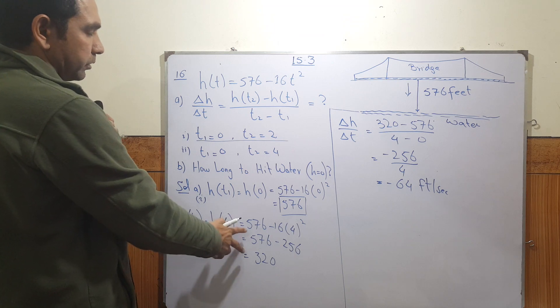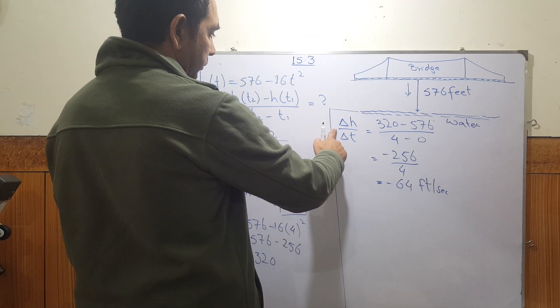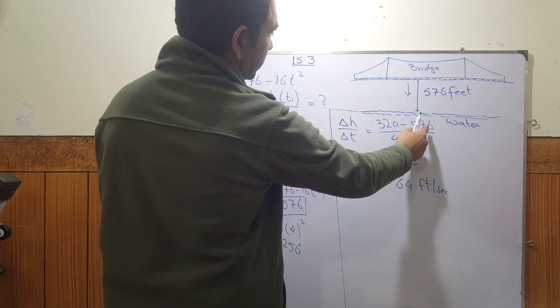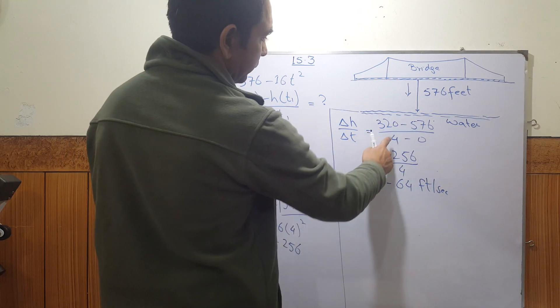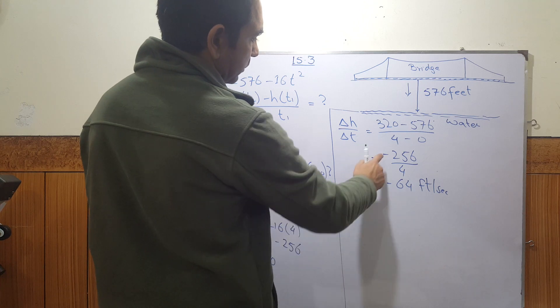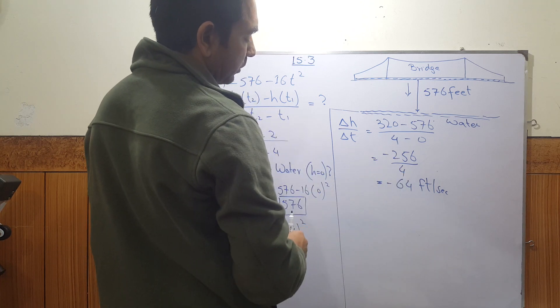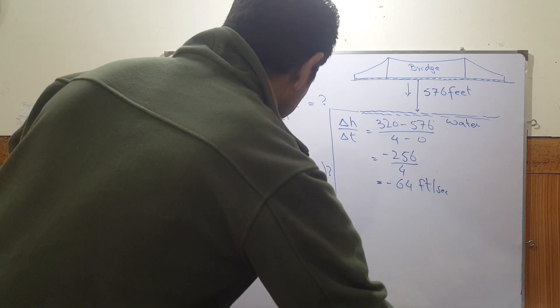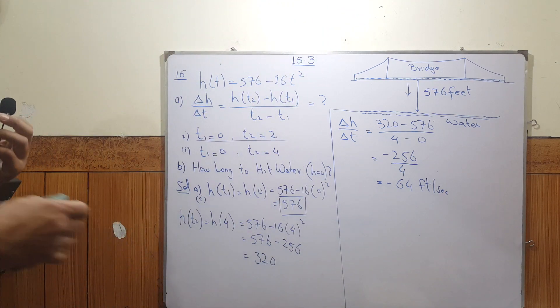Now substitute these two values in this formula of average rate of change of height. So that is 320 minus 576 divided by four minus zero, that gives us minus 256 divided by four which is minus 64. And again the negative sign is due to the motion in the direction towards the water.